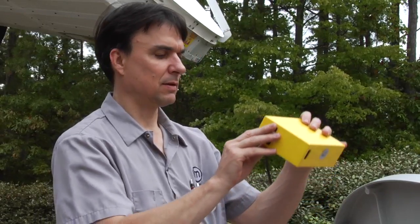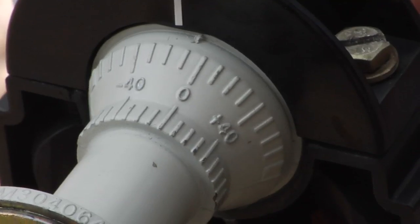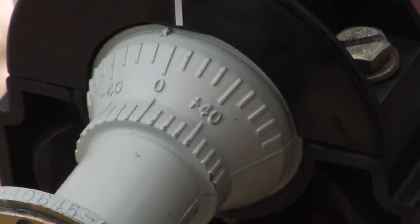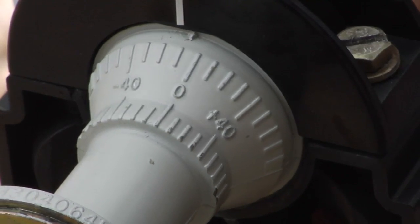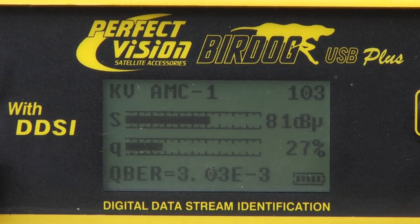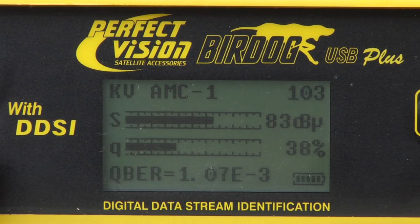With your signal strength meter attached to the antenna, rotate the horn until the signal strength and quality are at maximum. Be sure you're locked to the correct satellite and transponder as indicated on the display.